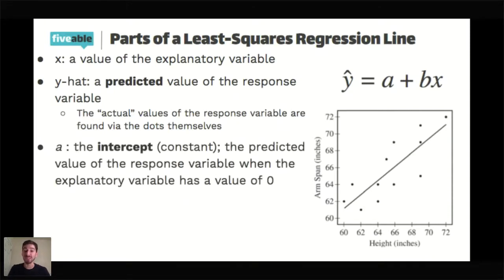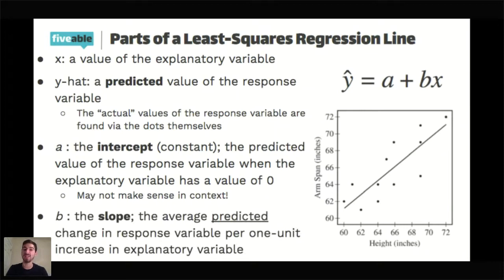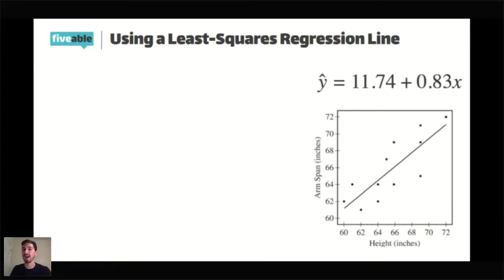A is called the intercept or constant — it is going to be the predicted value of the response variable when the explanatory variable has a value of zero, which may or may not make sense in context. And b, the thing in front of the x, is the slope. In the context of regression, it represents the average predicted change in the response variable per one unit change in the explanatory variable. Here's a specific example: y-hat, the predicted arm span, equals 11.74 plus 0.83 times the given height. The actual mechanics of where those numbers come from is a bit beyond where AP Statistics usually goes. It's more important for us to understand how to use this equation and understand its different parts.